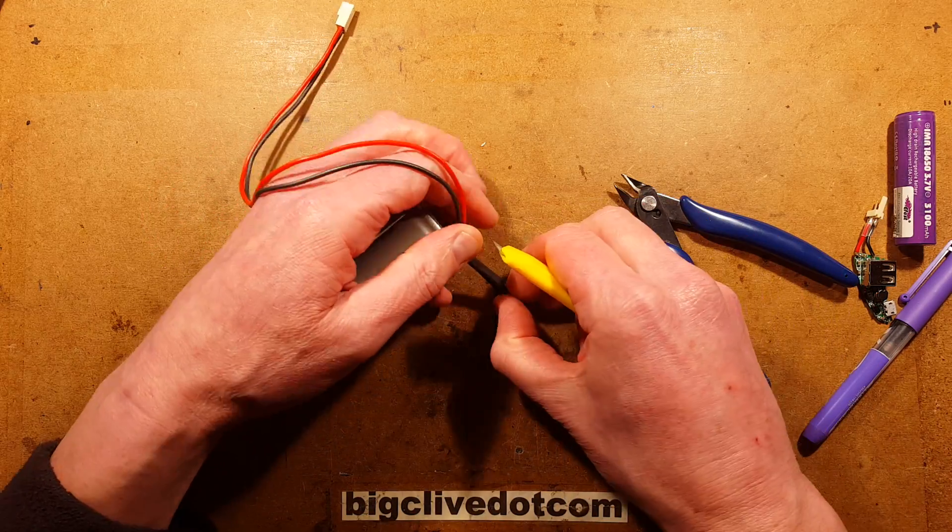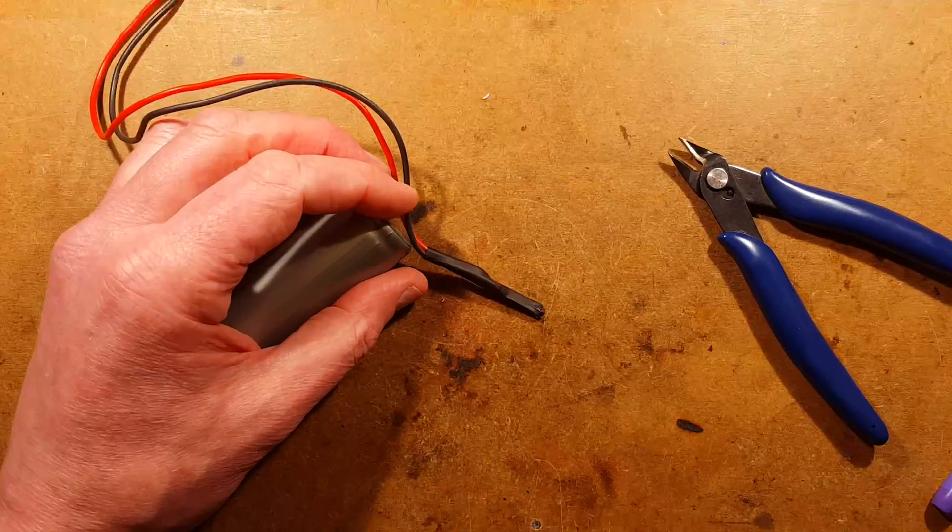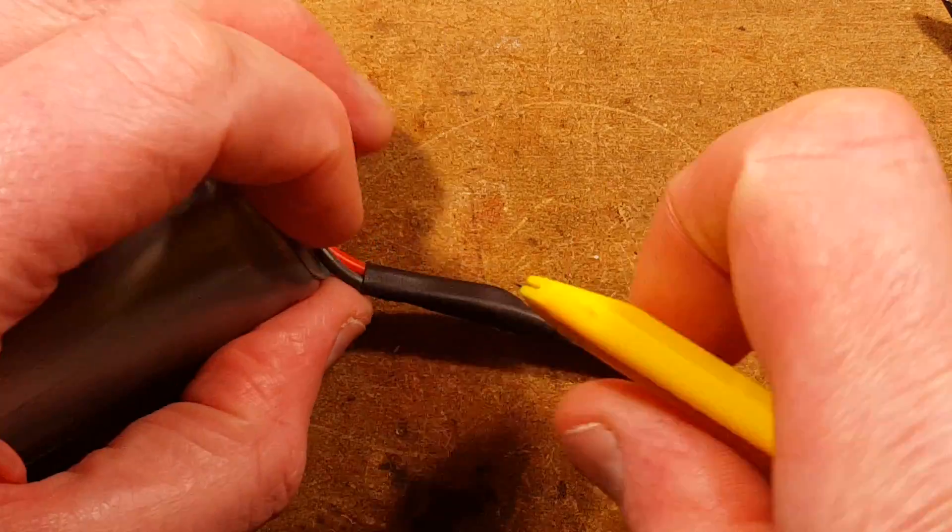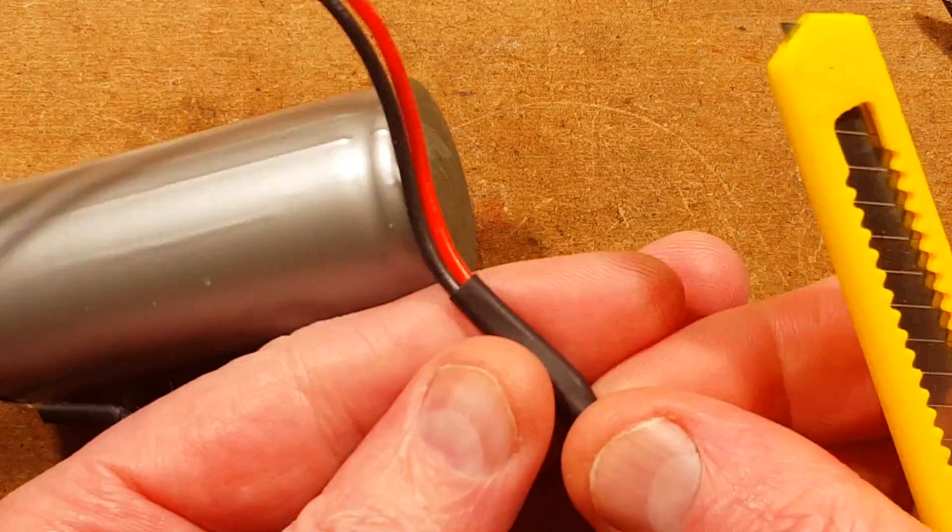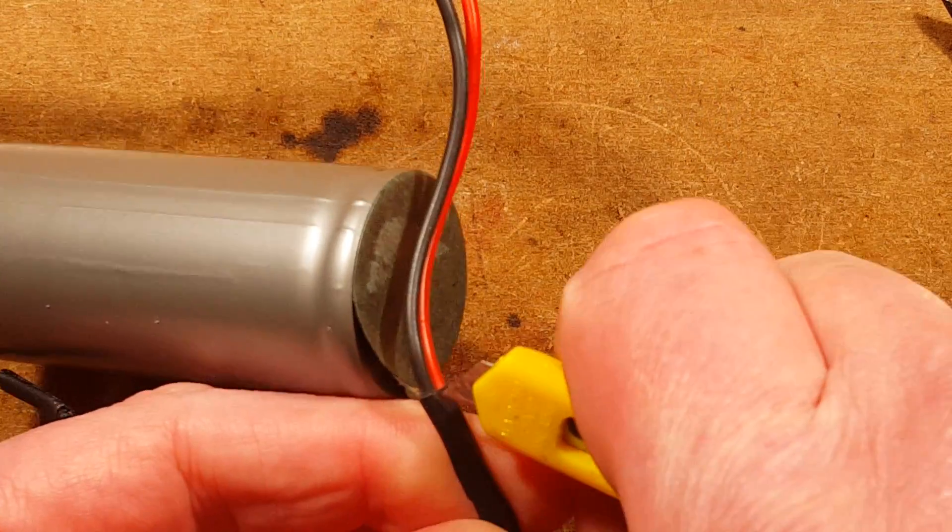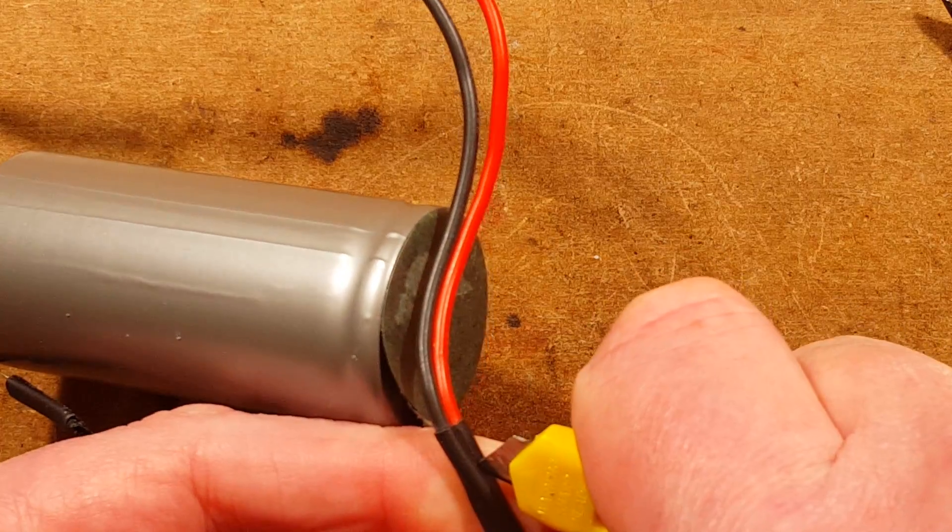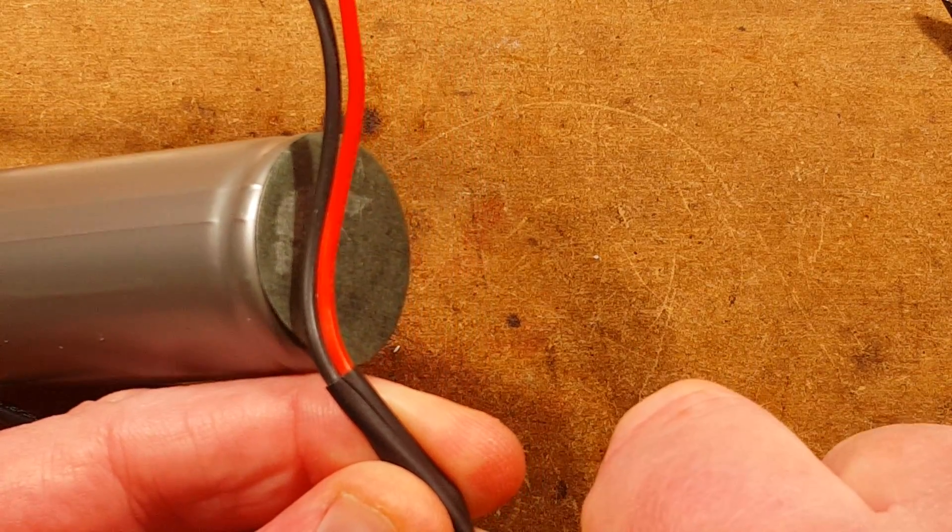So I'm going to carefully slit—I'll get down closer here so you can watch me have a terrible accident. I'm going to carefully slit the heat shrink along here, slicing into the insulation of these wires in the process probably.